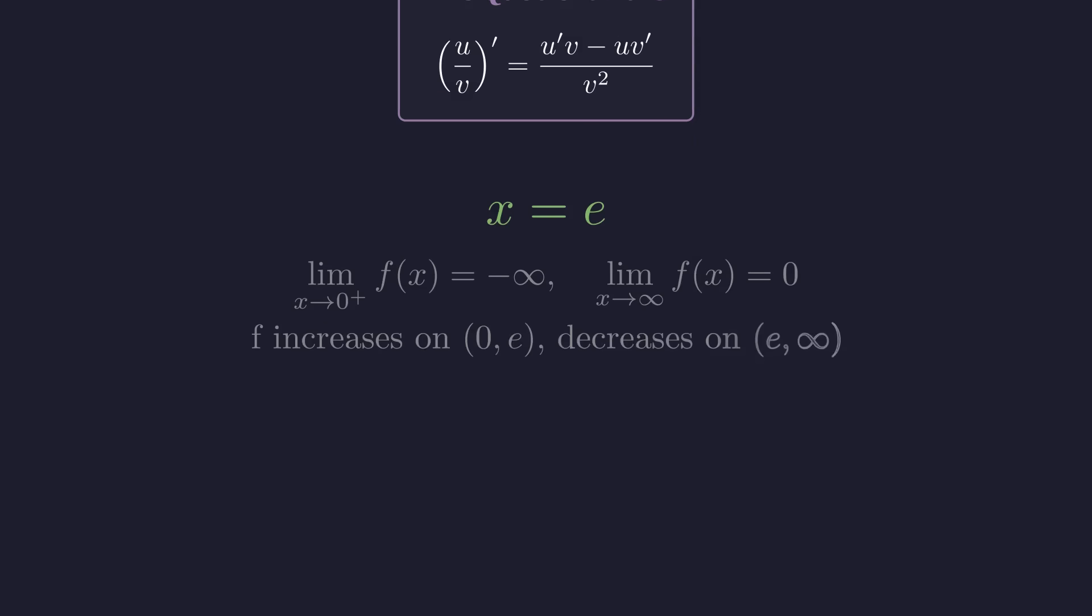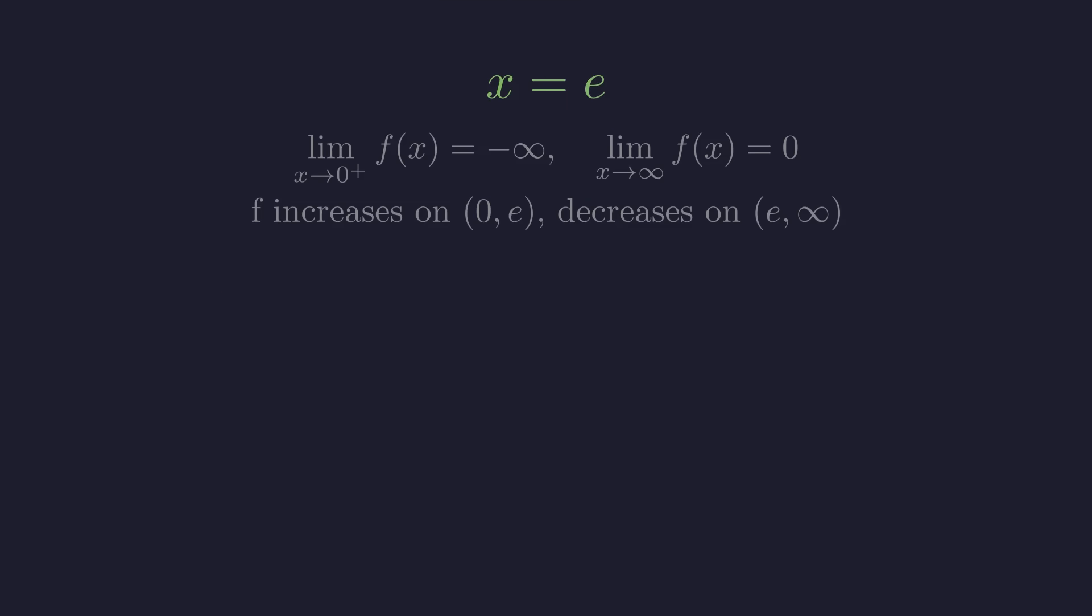Now, if we analyze this function more carefully, we can determine its overall shape. As x approaches 0 from the right, the function goes to negative infinity. As x goes to infinity, the function approaches 0. The function increases from 0 to e, then decreases from e onward. This creates a single hump shape, which means any horizontal line below the peak will cross the curve exactly twice. The maximum value of our function, which occurs at x equals e, is 1 over e.